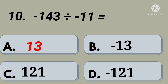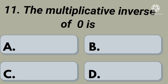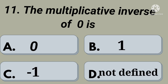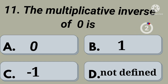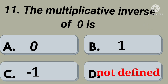Eleventh question: multiplicative inverse of 0 is. Option A: 0, option B: 1, option C: minus 1, option D: not defined. Your time starts now. Right, option D: not defined.